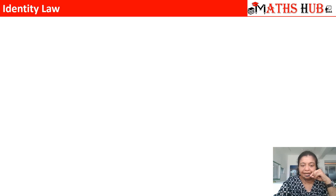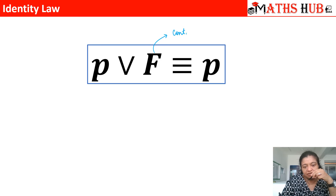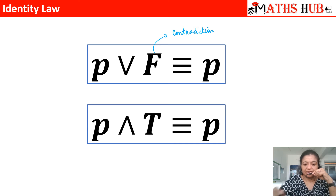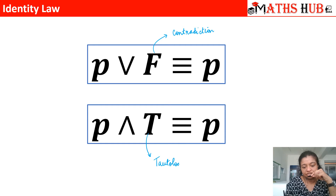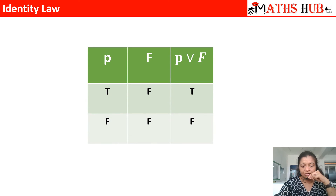The next law is the identity law. It says P OR F is equivalent to P, where F stands for a contradictory statement — a compound statement which always gives a false result. The second sub-law says P AND T is equivalent to P, where T stands for tautology, a compound statement which always gives a true value. So P OR F always returns P, and P AND T always returns P.